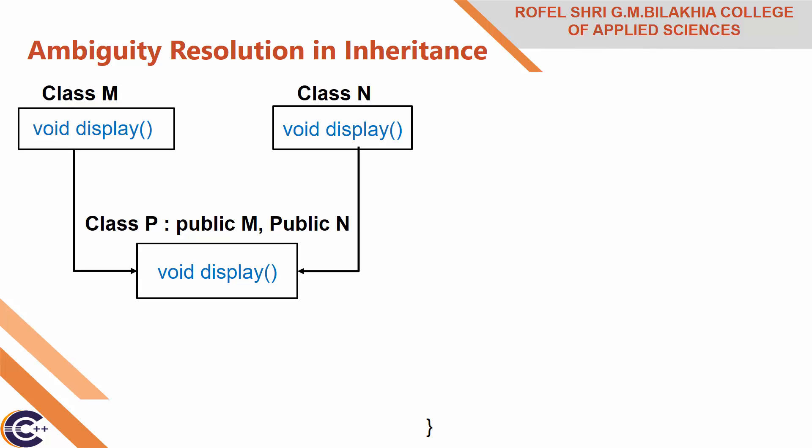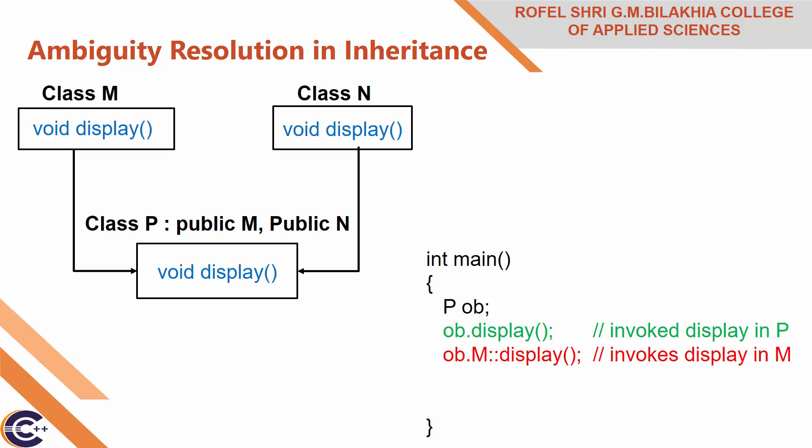We can resolve this problem by using the scope resolution operator with the class name when we call the function. For example, in int main, first create child class object ob. If I write ob.display, it will invoke the display method in class P, overriding the methods of class M and class N. If I want to call the display method of base class M, I write ob, then M with scope resolution operator, then display — it invokes display in class M. Similarly for class N: ob.N::display invokes display in class N.